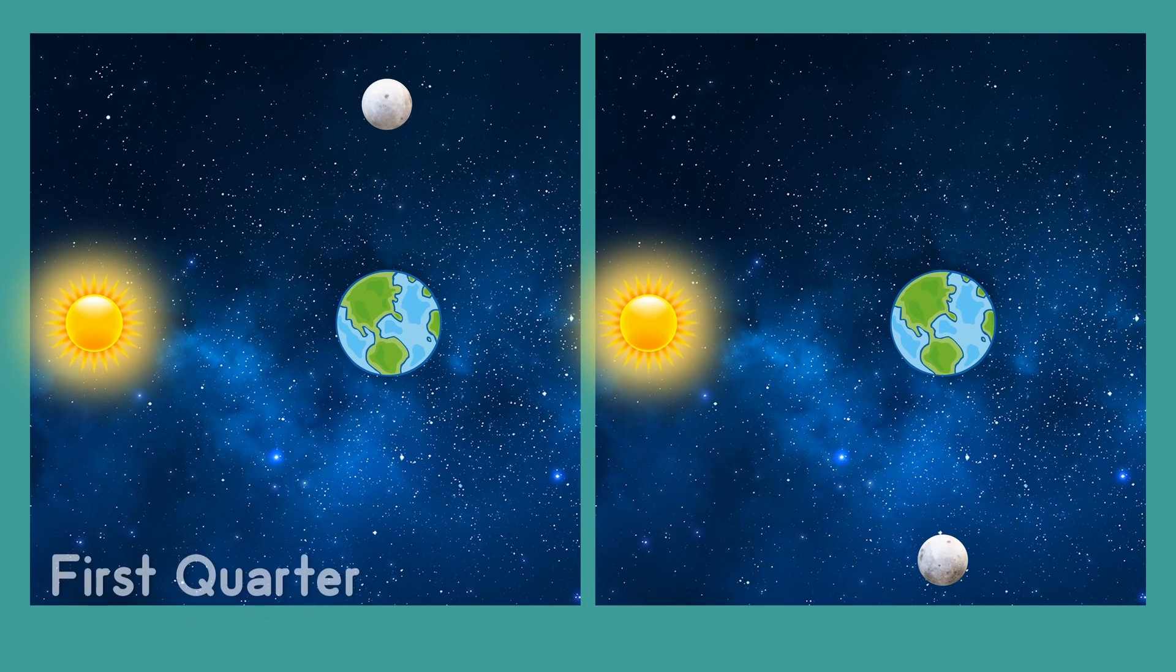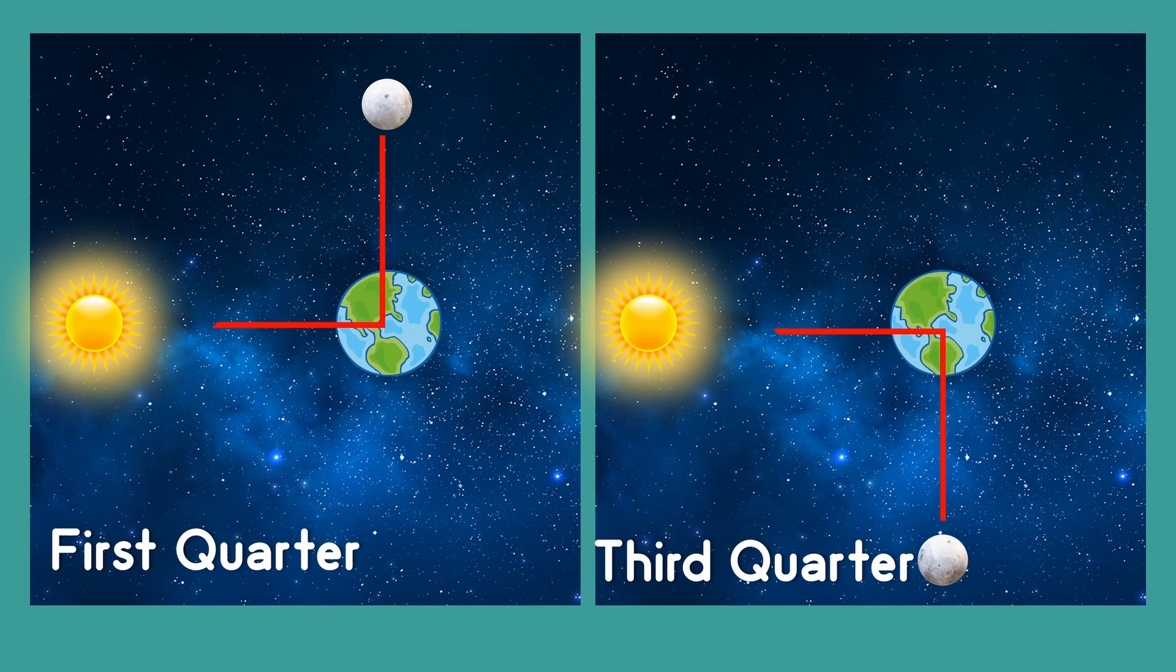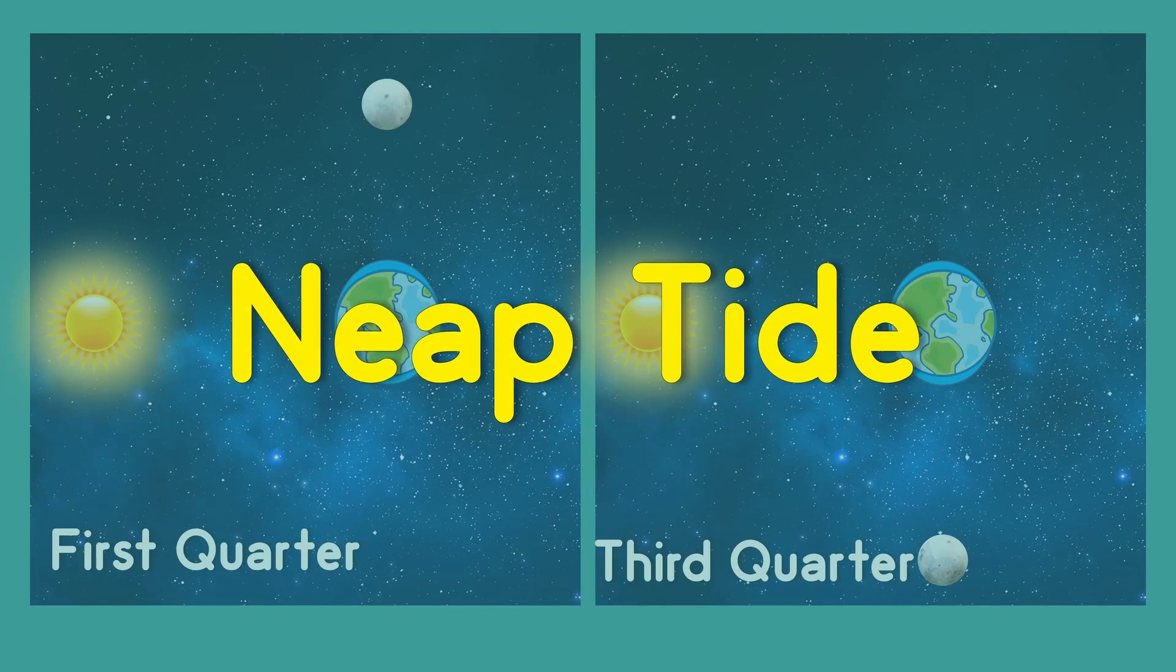When the moon is in its first quarter or third quarter, the sun and the moon are separated by 90 degrees when viewed from the earth, then the solar tidal force partially cancels the moon's tidal force. At these times, the tide's range is at its minimum. This is called the neap tide.